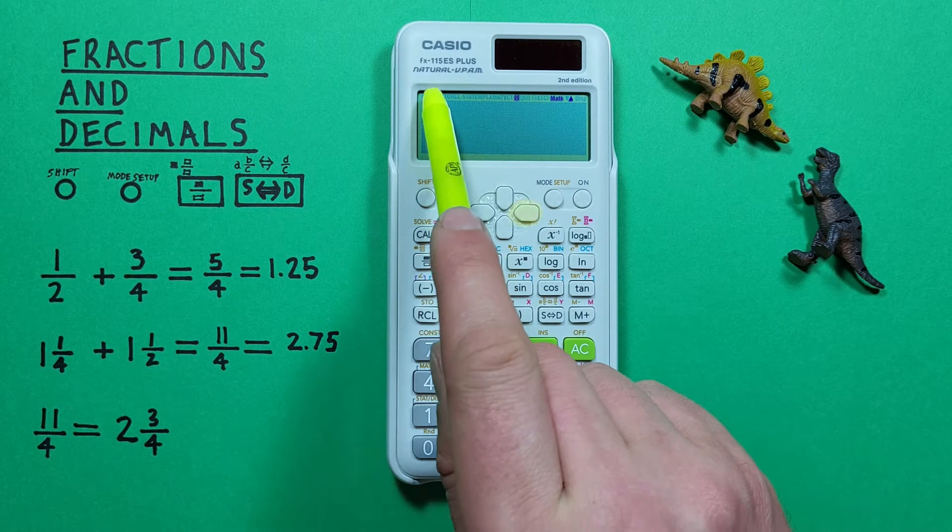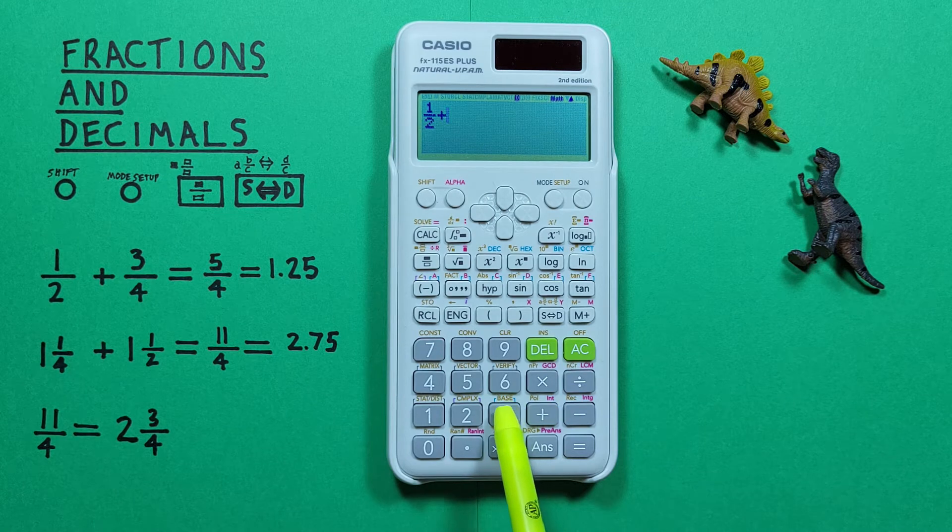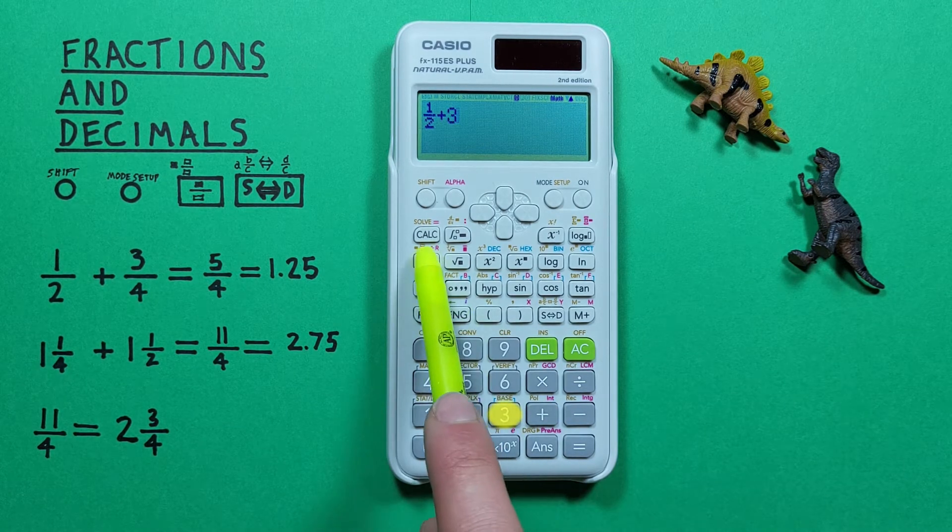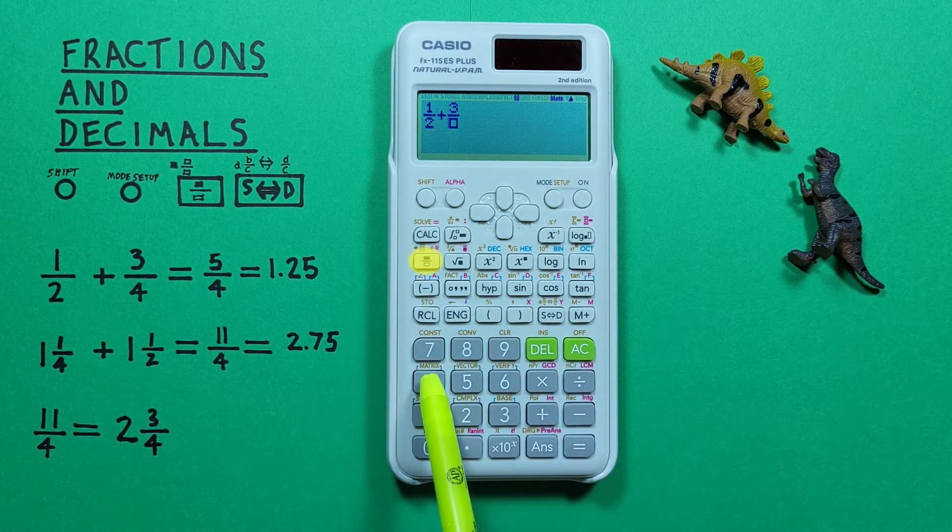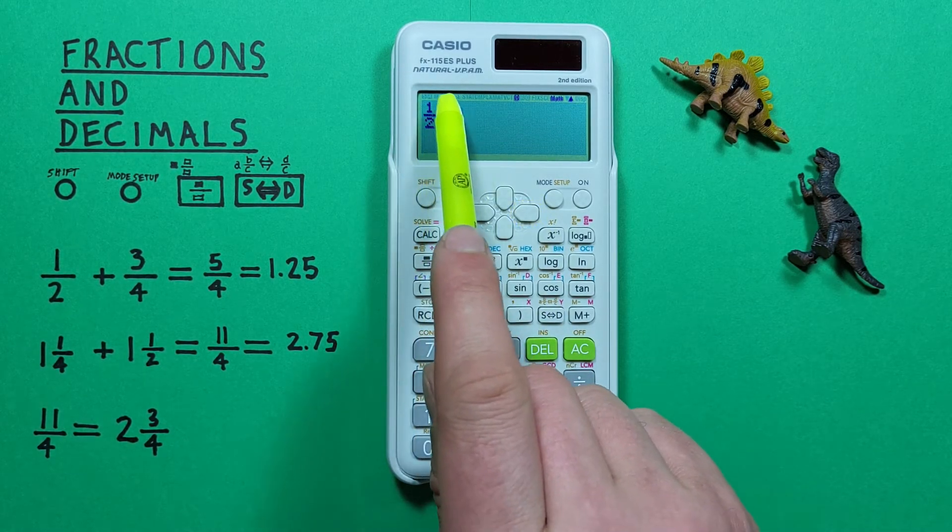There we go. There's our 1 over 2, plus then 3. Again the fraction key. And then the 4 in the bottom. Scroll out. There we have 1 over 2 plus 3 over 4.